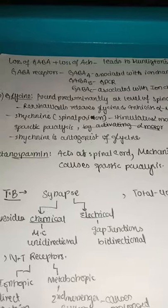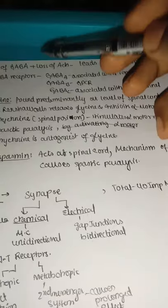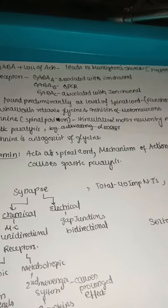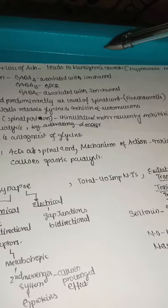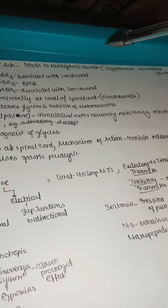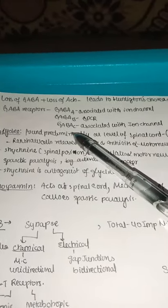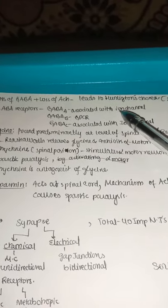Loss of GABA associated with loss of acetylcholine mainly leads to Huntington's chorea, a hyperkinetic movement disorder with involuntary movements.